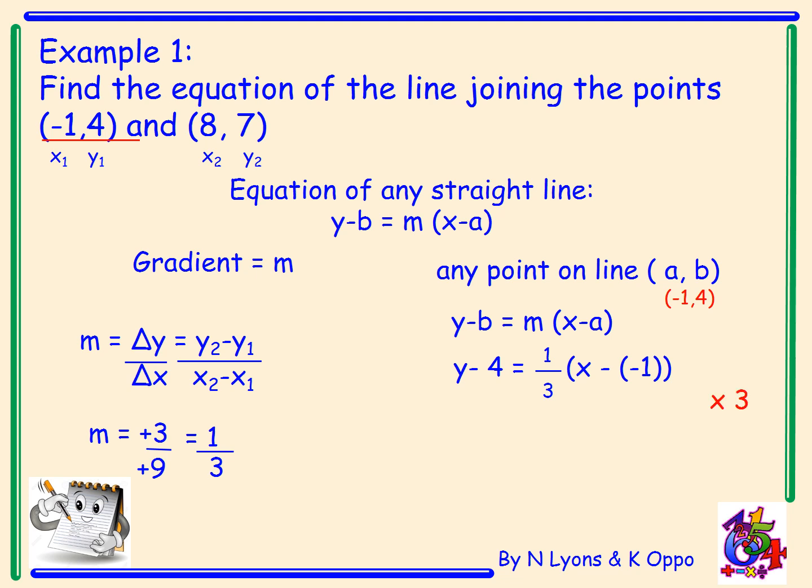Now I don't want to work with fractions. I need to simplify it. So what you have to do is multiply through both sides of the equation by the denominator. In this case, that's three. That gives me 3y minus 12 equals x plus one. So the x minus minus one becomes an x plus one, and the third has vanished. We've simplified the equation.